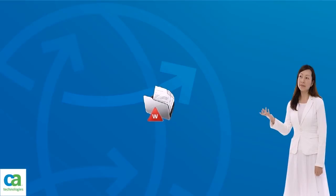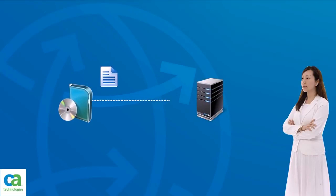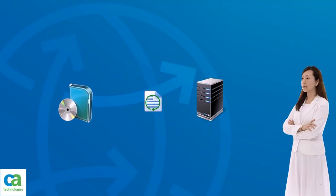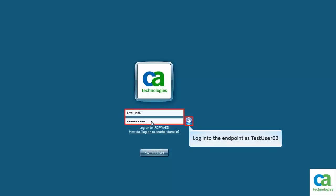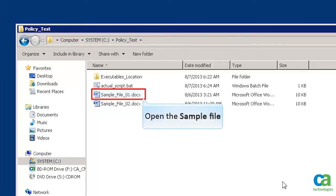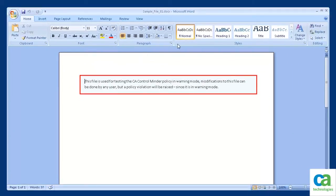Now that you understand the importance of using policies in warning mode, let's look at a practical example. You need to create a sling policy deployed on a Windows endpoint that will restrict access to a specific file on the system. You will first deploy the policy in warning mode, and once confirmed working as expected, deploy it in final mode. Let's log into the endpoint as test user 02 and access the sample file, which is located in the policy test folder on the C drive. Let's double-click the sample file to open it. We now know that test user 02 can currently access the sample file.